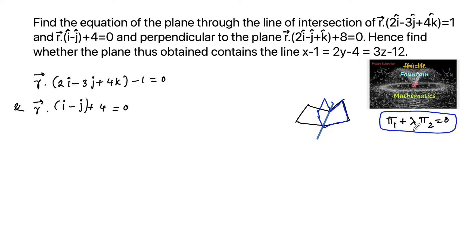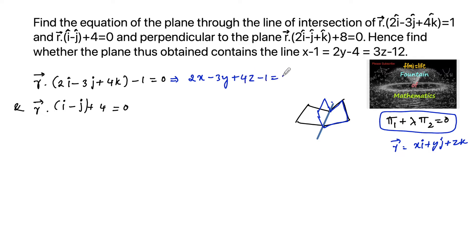This family can be represented by π1 + λπ2 = 0. Let us represent this in Cartesian form by substituting r = xi + yj + zk. We can write 2x - 3y + 4z - 1 = 0 in Cartesian form, and the second plane becomes x - y + 4 = 0. These are the two plane equations — call them equation 1 and equation 2.